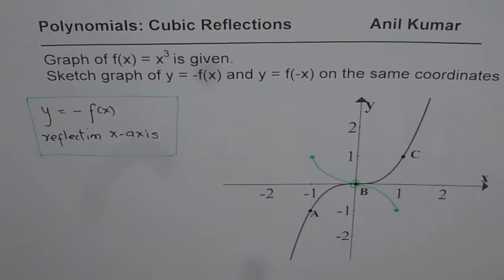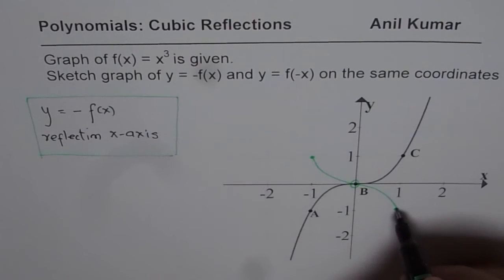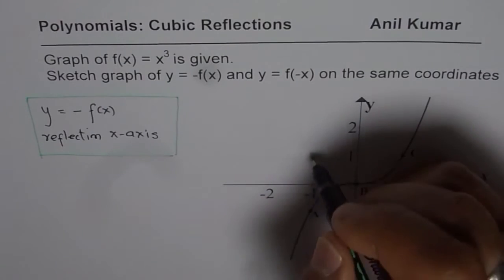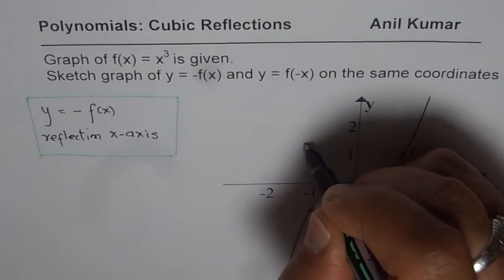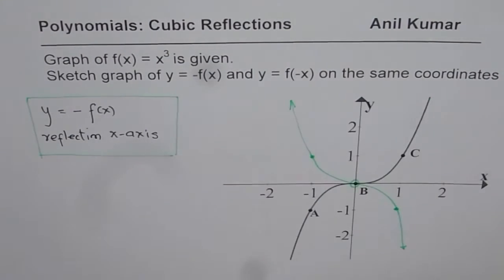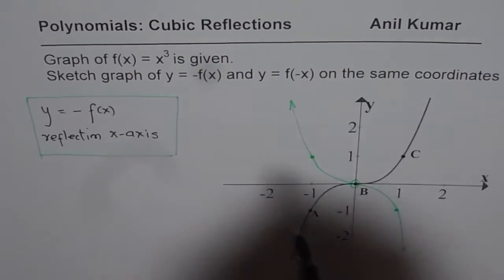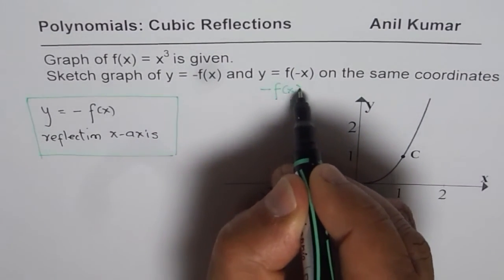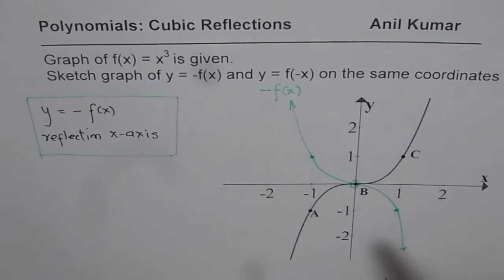We call this shape resembling as tilde. And then you can extend it. So it is kind of like this. Now, we can extend it on this side also. So that is how the graph of -f(x) looks like. So we reflected the graph on the x-axis to get this function.